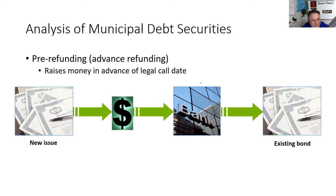Pre-refunding: raising money in advance of the legal call date. If Clark County has 5% bonds outstanding but can now issue at 2%, I recommend as municipal financial advisor: issue new bonds at today's 2%, take the proceeds, put them in a bank escrow account, and buy state and local government securities — SLUGs. That way, when the bonds pass their call protection period, we can call them.